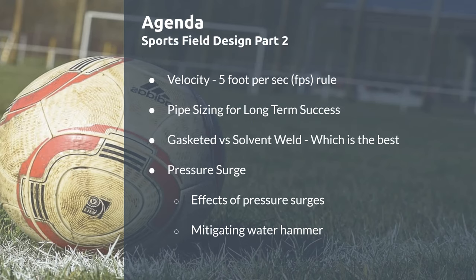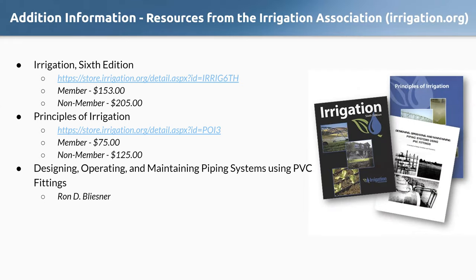But today we're going to be talking about velocity, today's gasketing, and we'll talk a little bit about that. Then we're going to spend quite a bit of time on pressure surges and the effects of those surges and how to manage those surges and water hammer. You have a lot of resources out there, not only with Land Effects — great program as far as pipe sizing and everything to help mitigate these pressure surges.